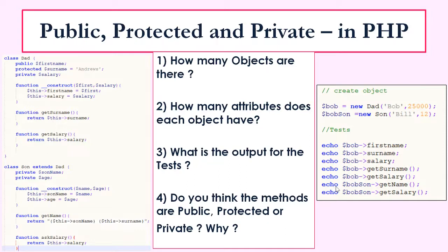Now looking at the second object — the son object. For 'bobson->getName()', we look at the getName method which echoes the son's name and then the surname. Remember, the surname is defined in the dad class, but protected attributes can be extended to other objects. So this method returns the son's own name combined with the inherited parent's surname, and should echo 'Bill Andrews'.